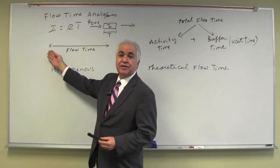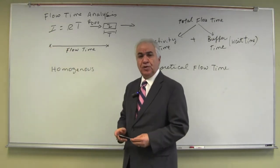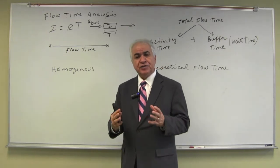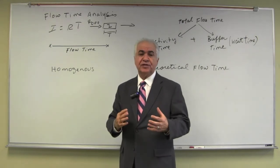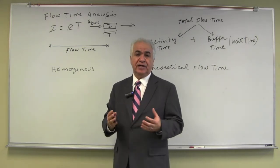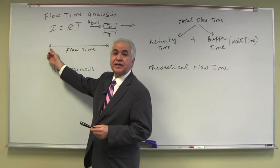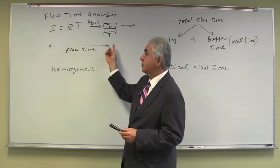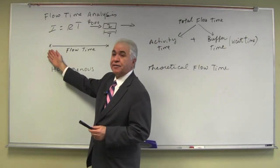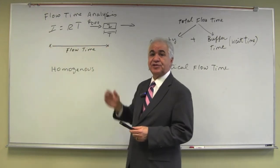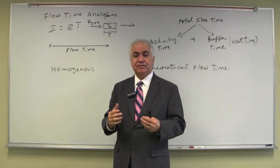Flow time is the total time of a flow unit to flow through the process. It is important to operationally define what flow time is — in other words, what is the starting point and ending point of that process. So if this is accounts receivable, is it from the time an accounts receivable document is submitted until it's collected? Is it a factory process from the time an order arrives until an order is shipped? It's good to know the operational definition of the flow time.